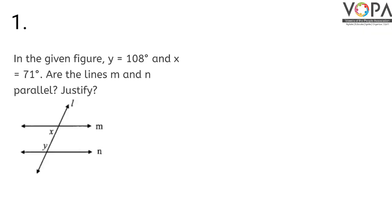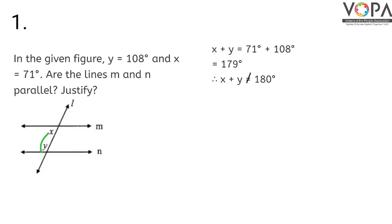In the given figure, y is equal to 108 degrees and x is equal to 71 degrees. Are the lines m and n parallel? We can add x plus y, that is 71 degrees plus 108 degrees, which comes to 179 degrees.